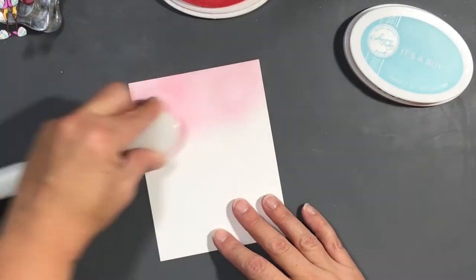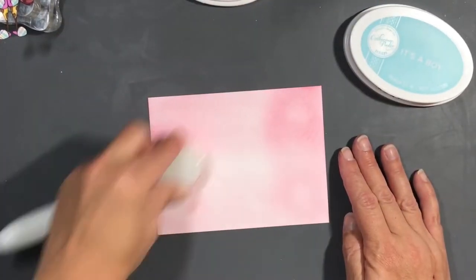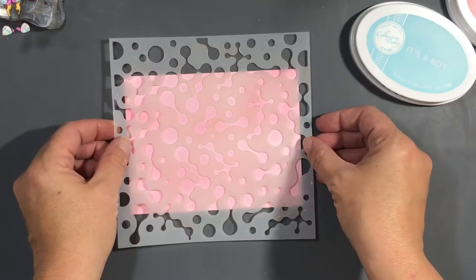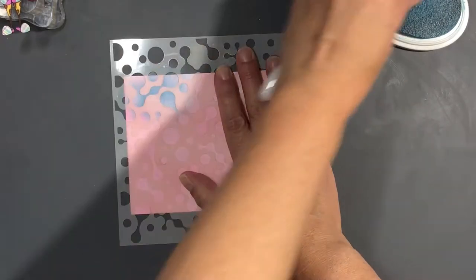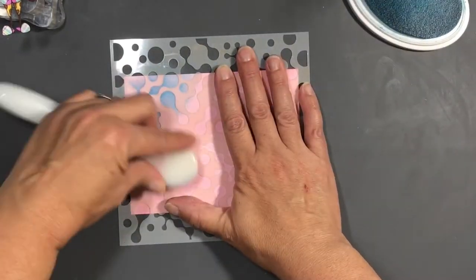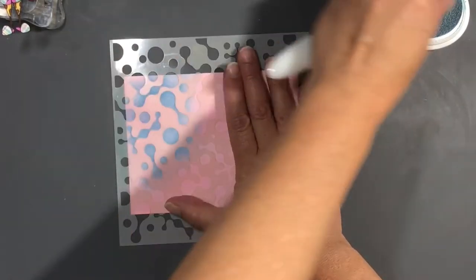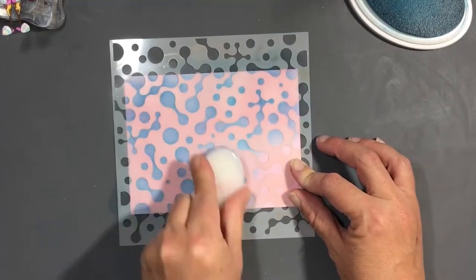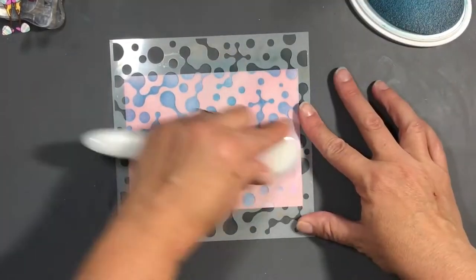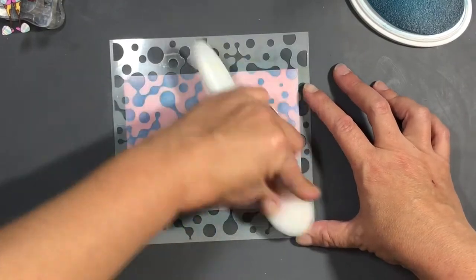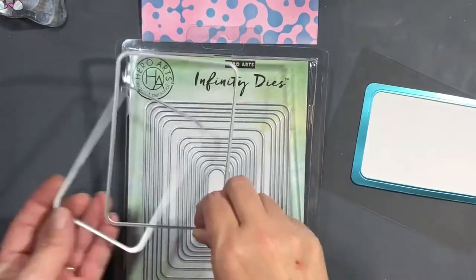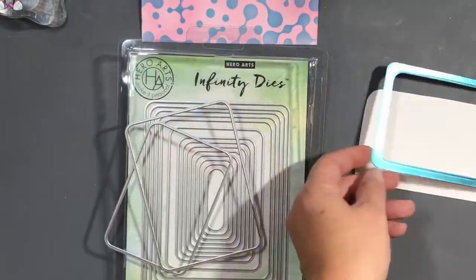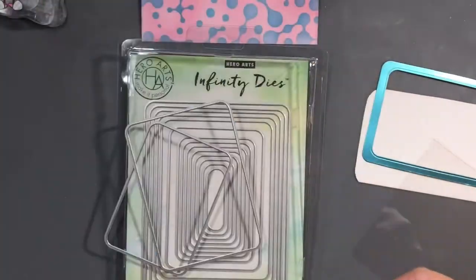Now I'm gonna use some Catherine Pooler inks, It's a Girl and It's a Boy. I was hoping that the pink mixed with the blue would turn to purple because that plaid giraffe with the plaid robe has purple in it, but it didn't really take on any purple tones. It stayed blue and pink. I don't know if that's because I think these are more dye inks, maybe. Perhaps I'll try that with something else next time, but there's still blue in the robe so we can work with that.